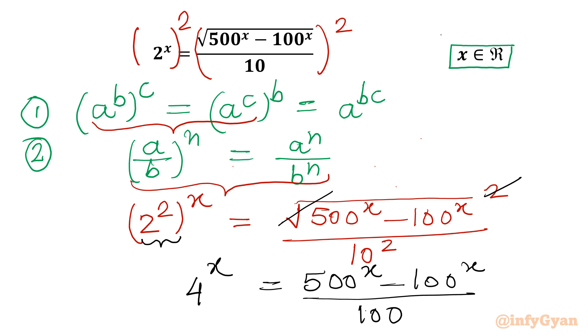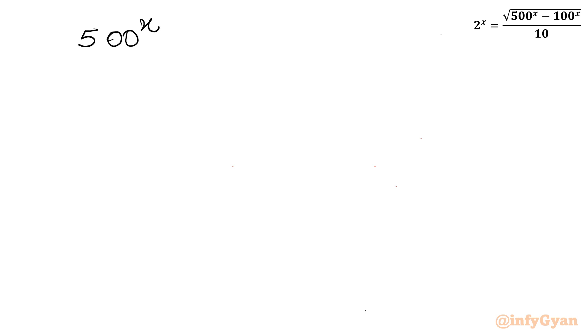Now cross multiply. So I can write 500^x - 100^x = 100 × 4^x.